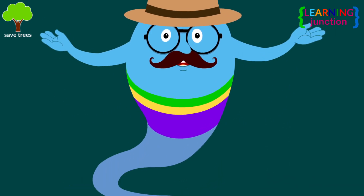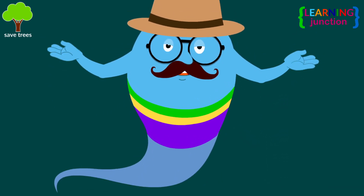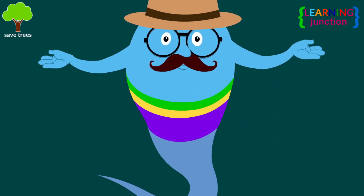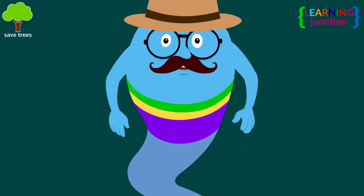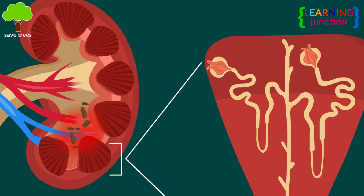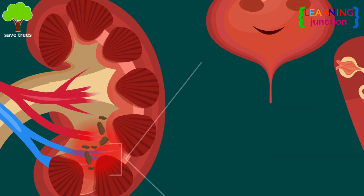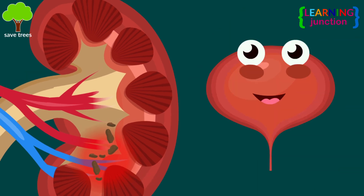With time, these crystals grow in size and form kidney stones. Most kidney stones form on the interior surface of the kidneys, where urine leaves the kidney tissues and enters the urinary collecting system.